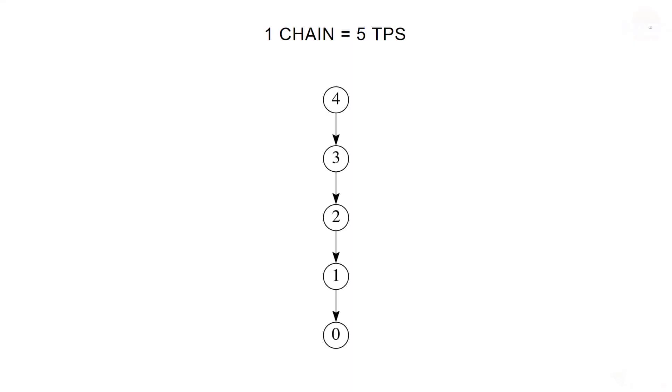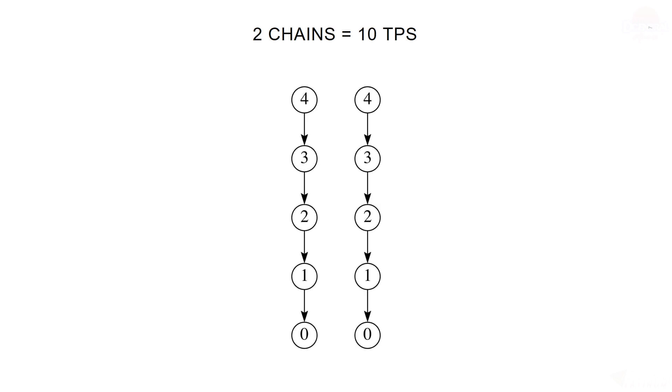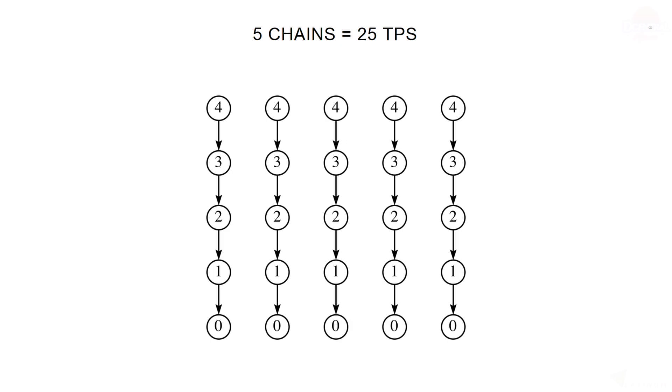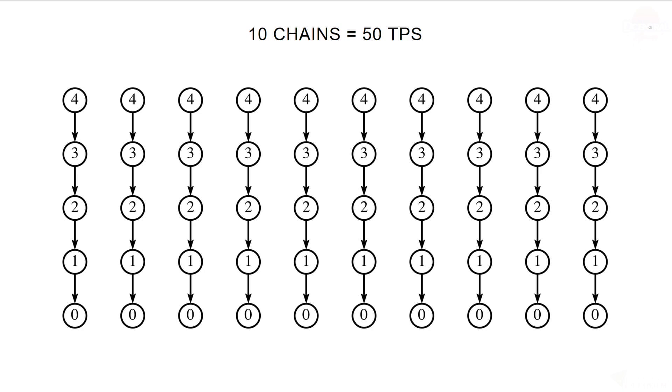If we have one chain and it can do five transactions per second, with two chains we should be able to do 10. With five chains we should be able to do 25. 10 chains, 50, et cetera.